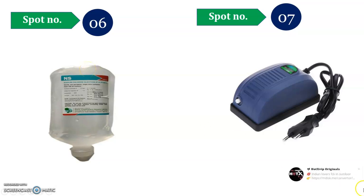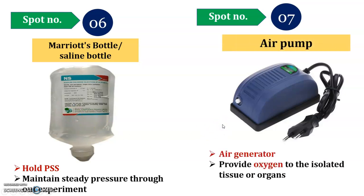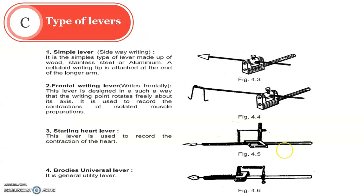Spot number six is known as the Saline Bottle, Mariotte's Bottle, or Perfusion Bottle. It holds the PSS and maintains steady pressure. It contains different ions — you know the components used to prepare the physiological salt solution. The next spot, number seven, is the Air Pump, which generates air and provides oxygen to the isolated organs.